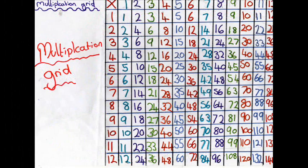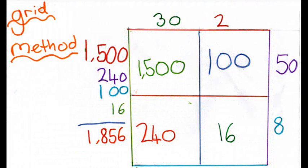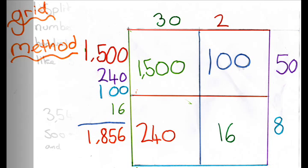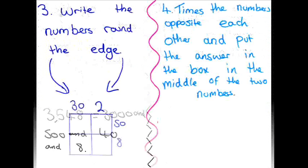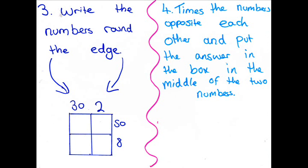1 x 1 is 1, 2 x 1 is 2, 3 x 1 is 3, 4 x 1 is 4, 5 x 1 is 5, 6 x 1 is 6, 7 x 1 is 7, 8 x 1 is 8, 9 x 1 is 9, 10 x 1 is 10, 11 x 1 is 11. 12 x 1 is 12. That's it!